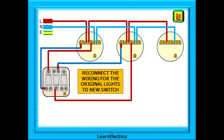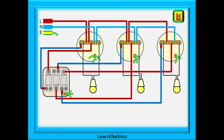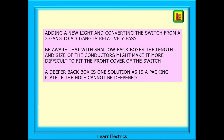Reconnect the wiring for the original lights to the new switch, then connect the new wiring to the new switch and the ceiling rose. The finished circuit with the lamps attached should look something like this. Again, for clarity the route of the CPCs has been left off the drawing. Adding a new light and converting the switch from a two-gang to a three-gang is relatively easy. Be aware that with shallow back boxes the length and size of the conductors might make it more difficult to fit the front cover of the switch.